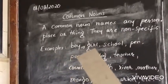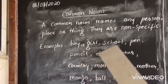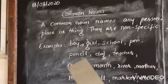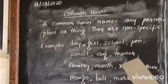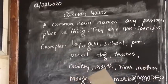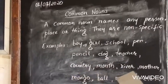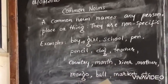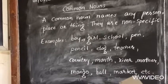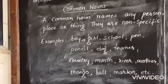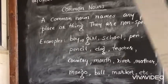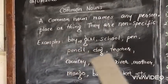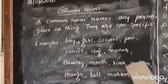Examples: boy, girl, school, pen, pencil, dog, teacher, country, month, river, mother, mango, ball, market, etc. You can see there is no specific name mentioned here. All are common names.